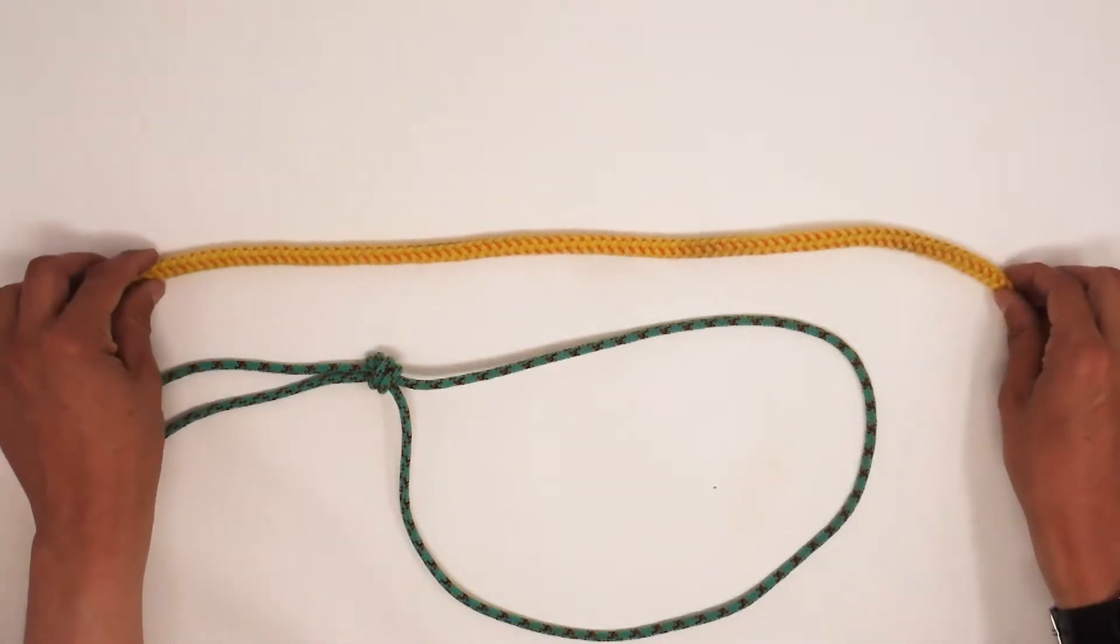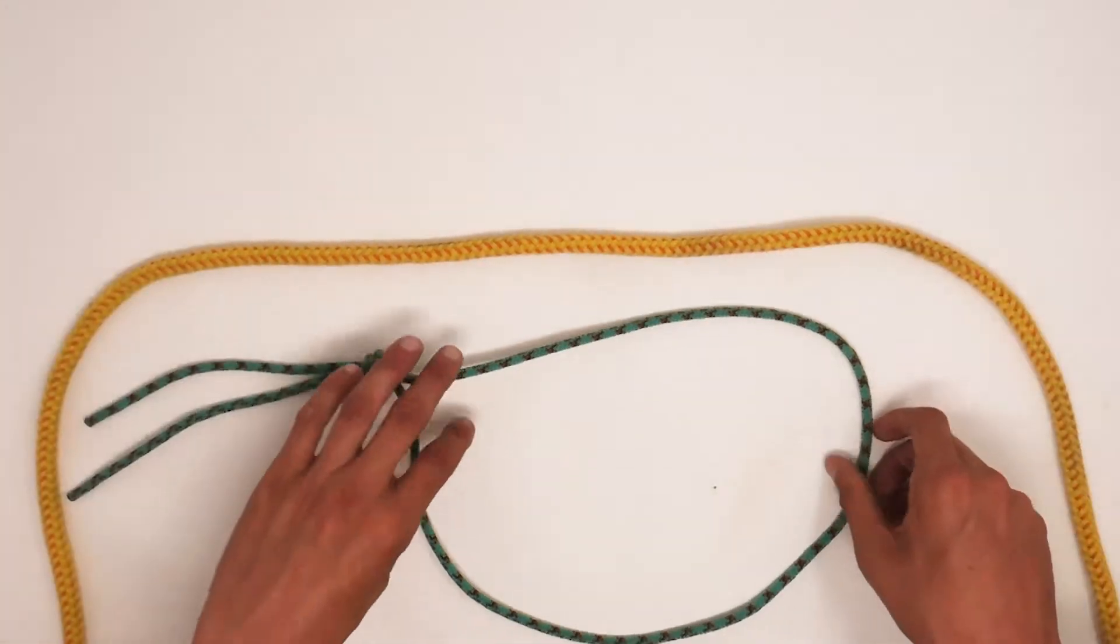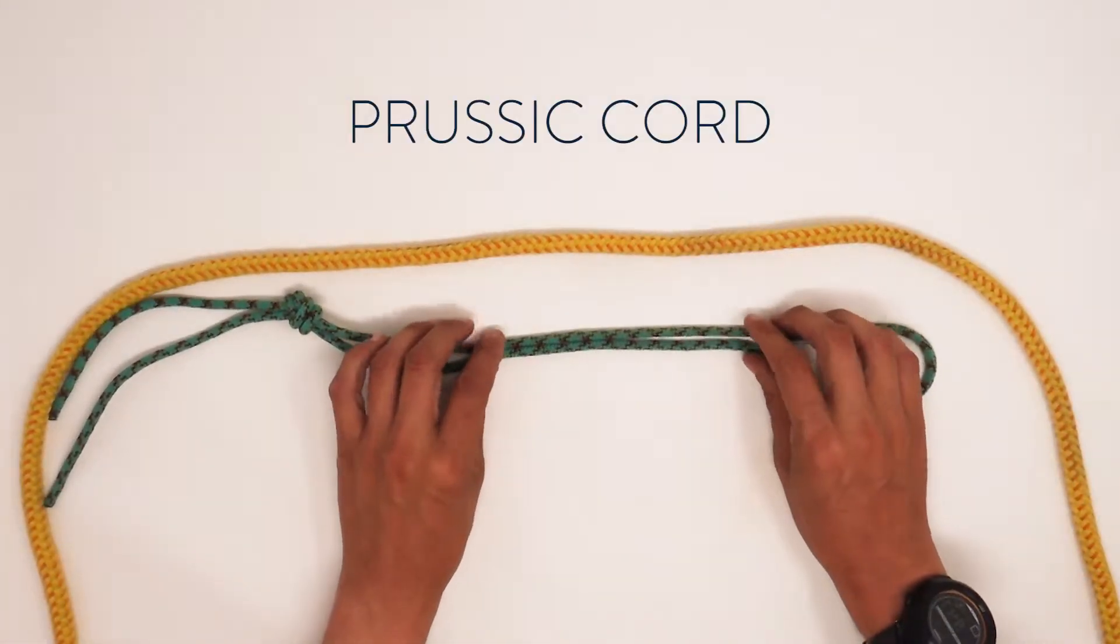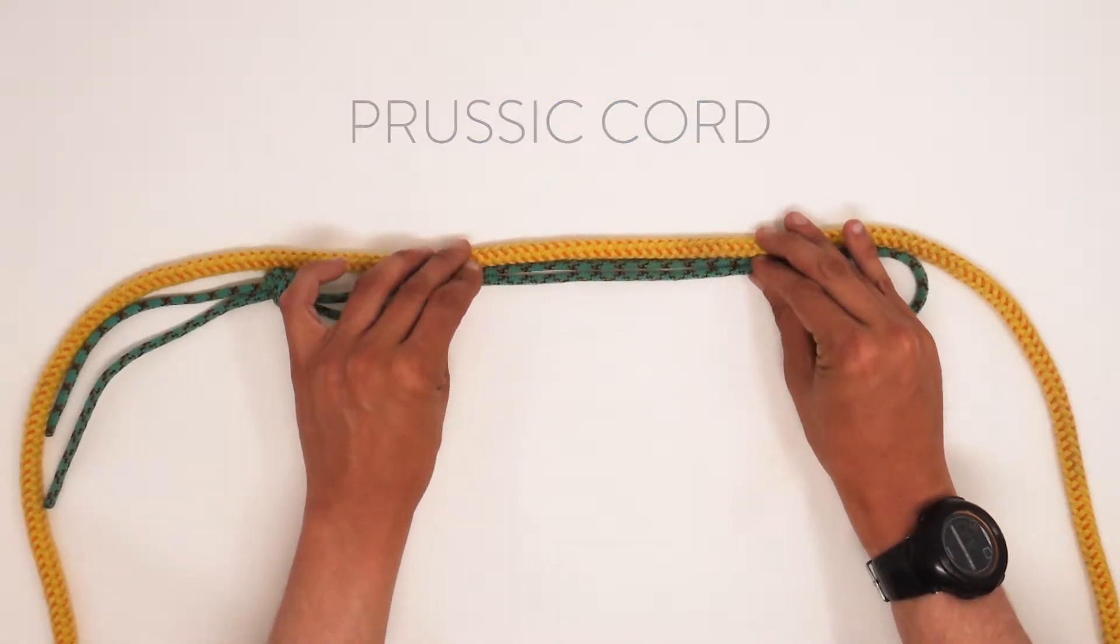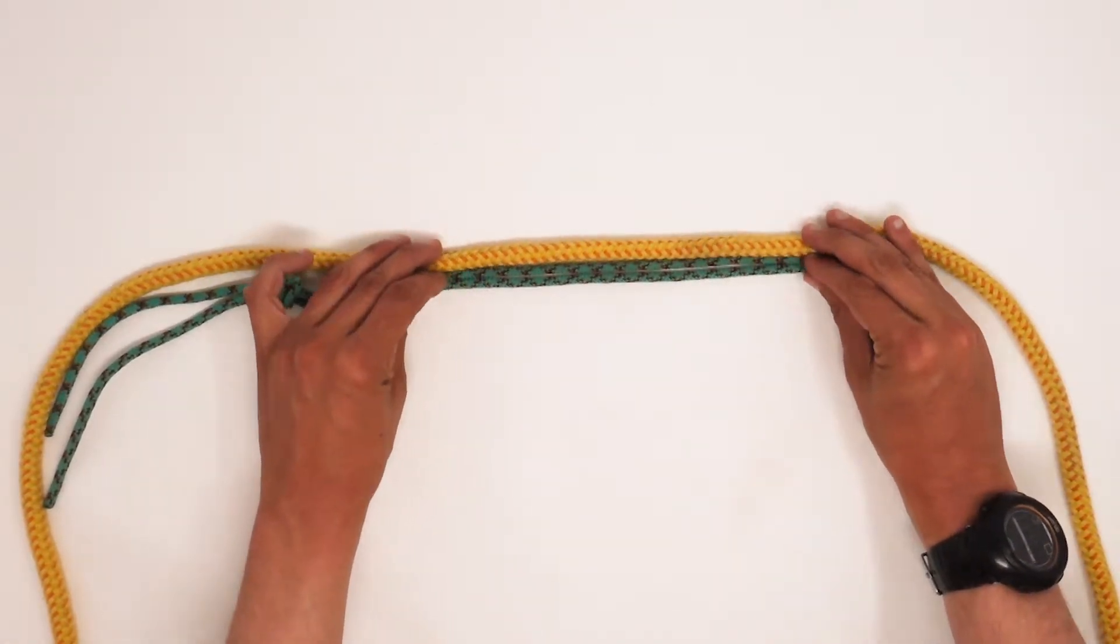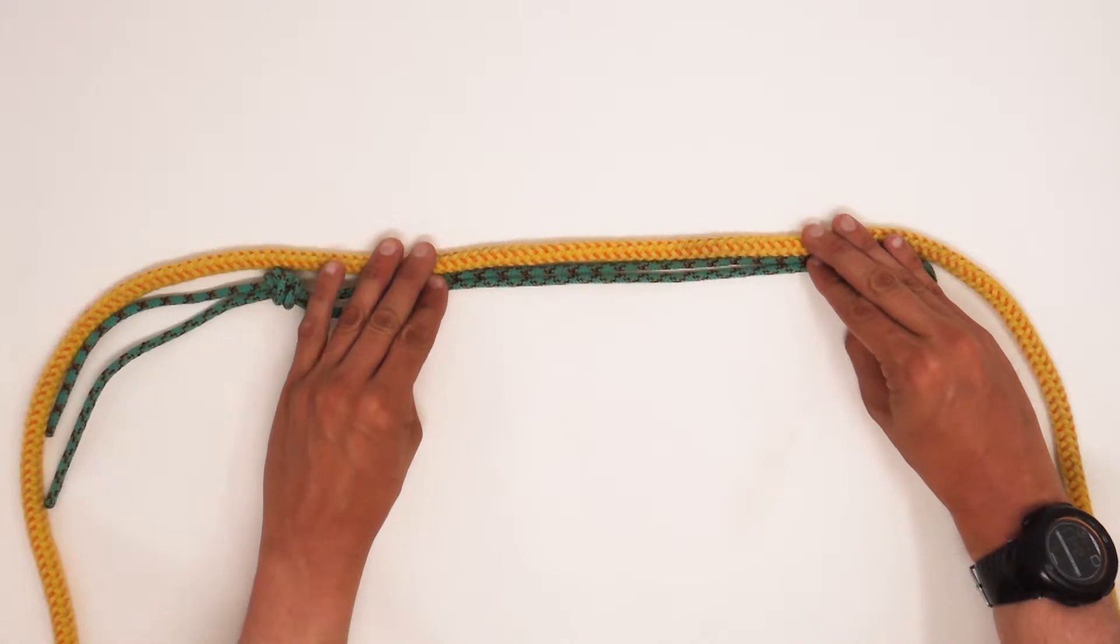We start with a bigger rope and a Prusik cord that's appropriate size, generally about half the size of the diameter of the bigger rope. You can see that here as we put both strands together.